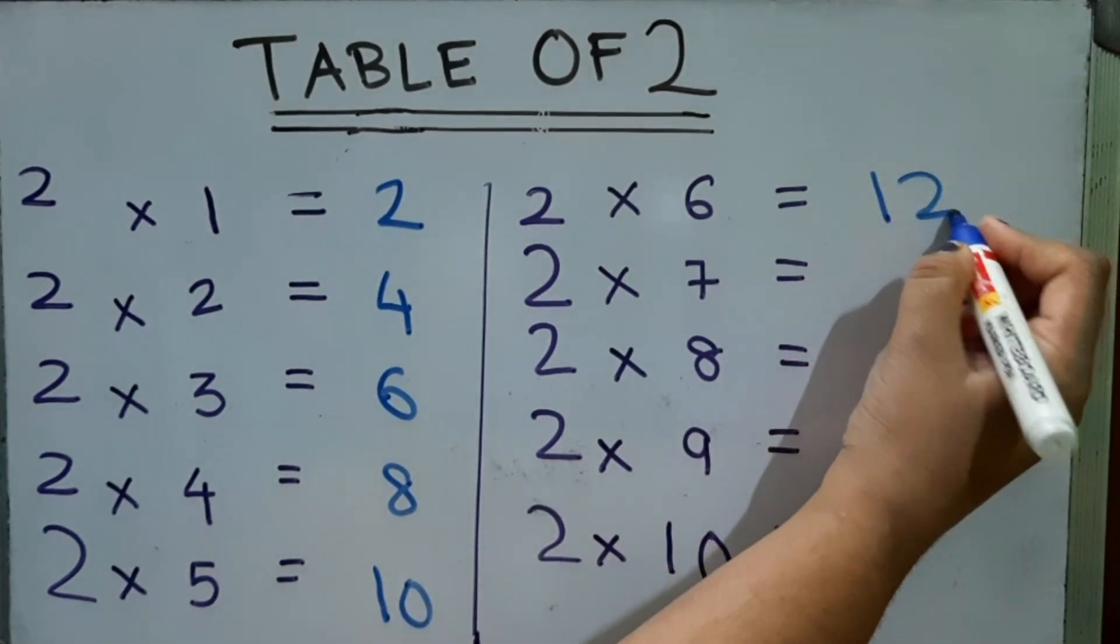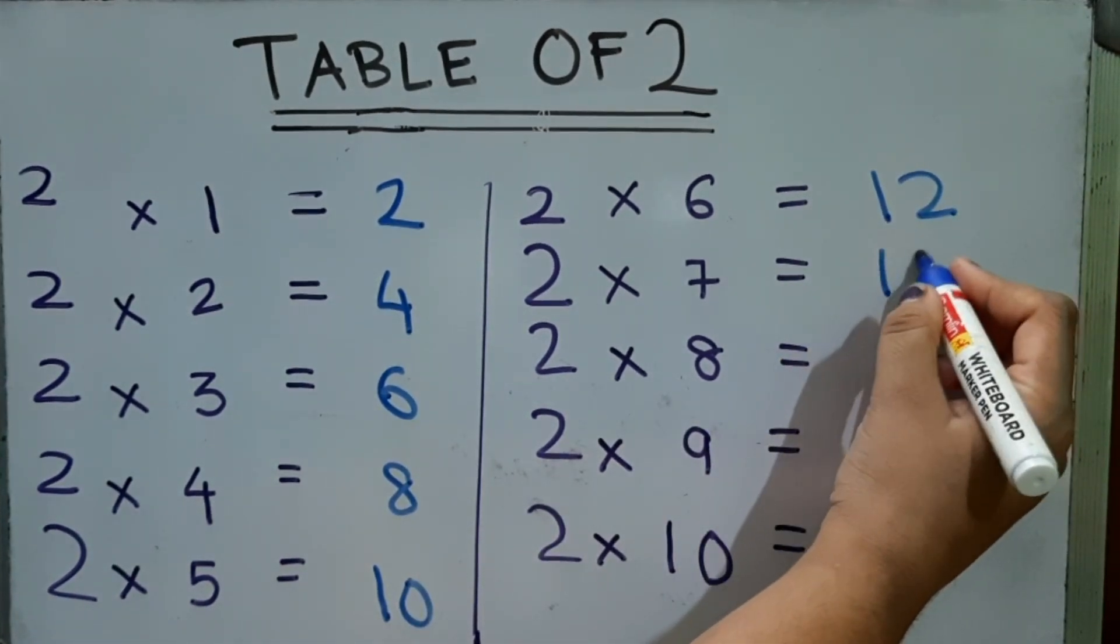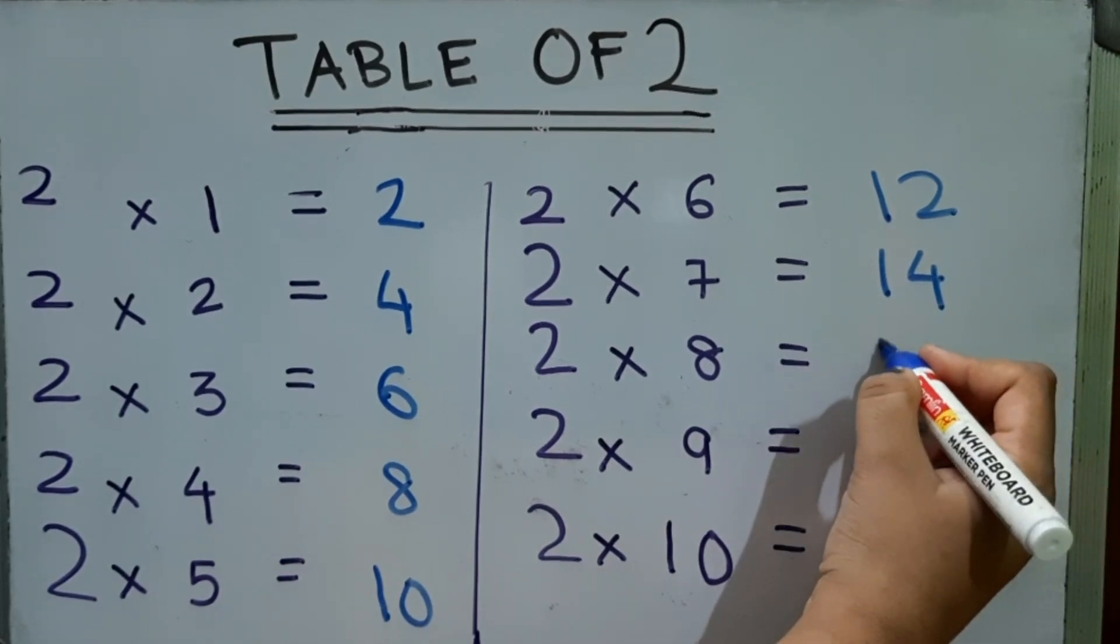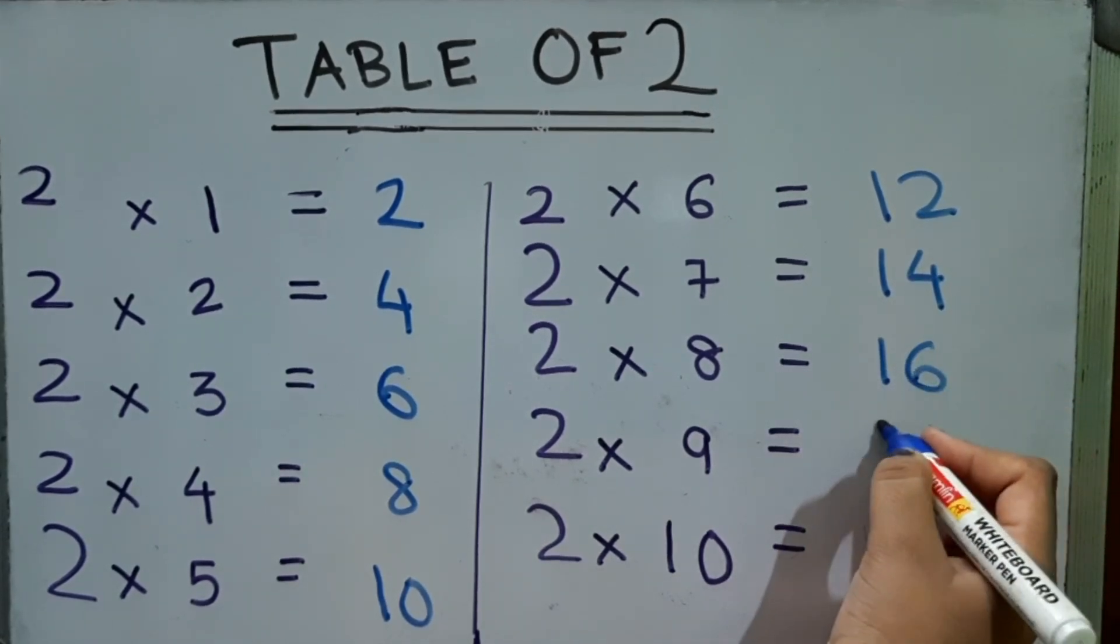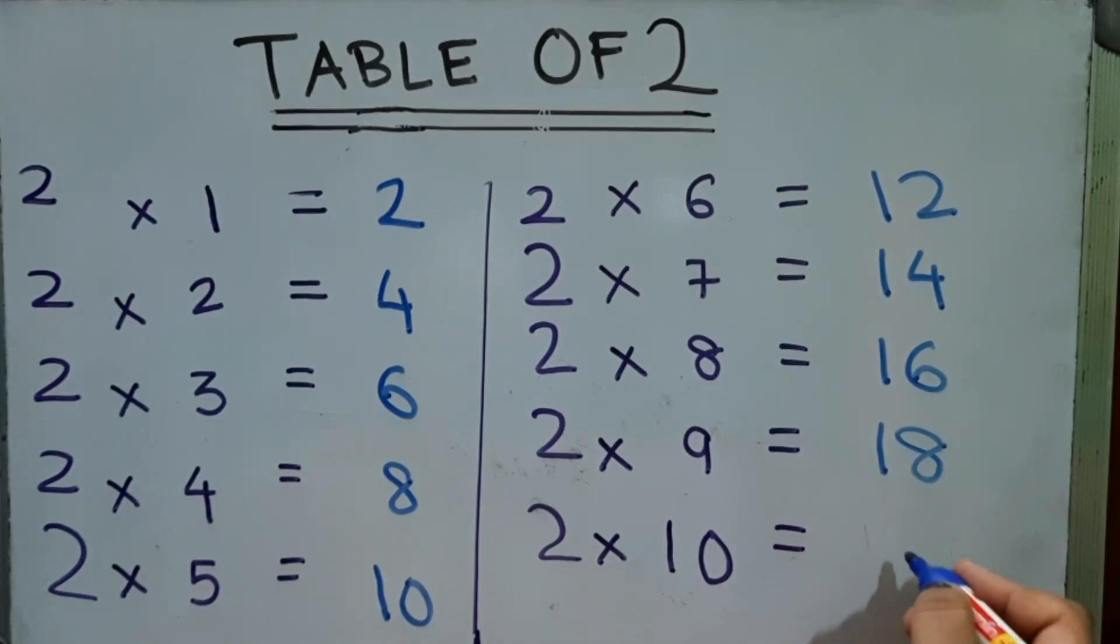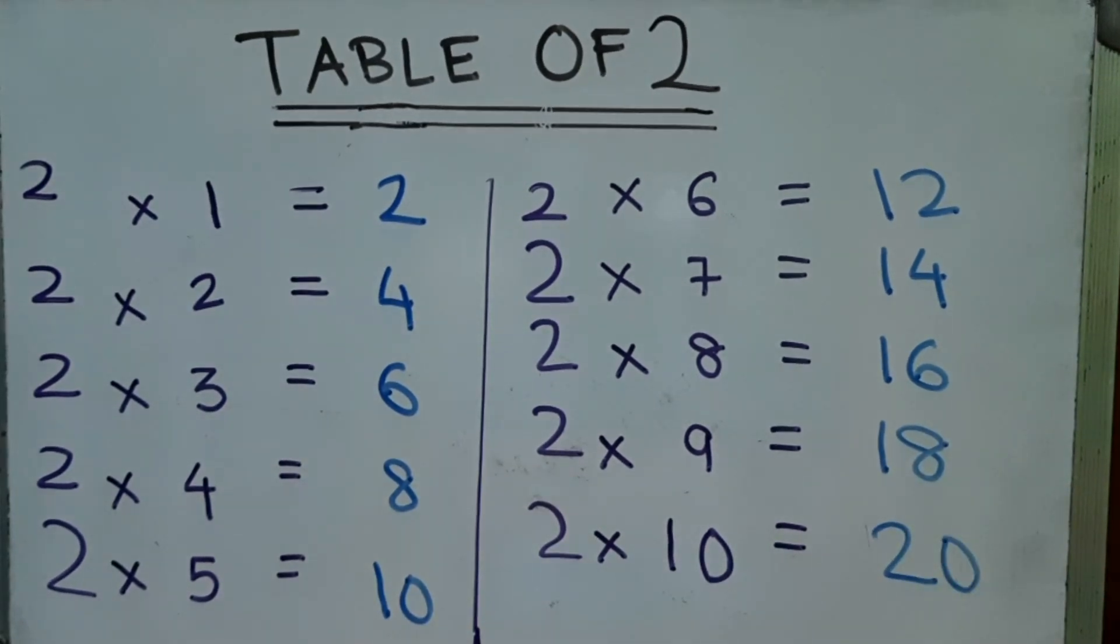2 into 6, 12. 2 into 7, 14. 2 into 8, 16. 2 into 9, 18. 2 into 10, 20.